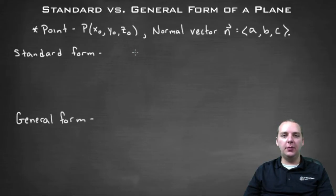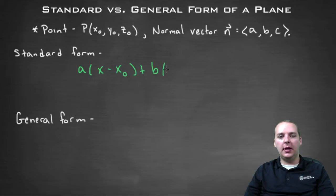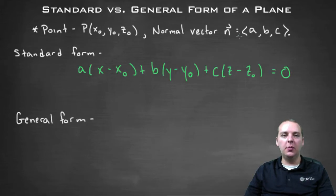So standard form, we've talked a good bit already about in the last couple of videos. To write this form down, which I'm not going to repeat again where this comes from, it's a times x minus x-not plus b times y minus y-not plus c times z minus z-not equals zero. Where the a, the b, and the c is from the normal vector. The x-not, y-not, z-not is from the point in the plane. And the x, y, and z themselves are just variables, period.